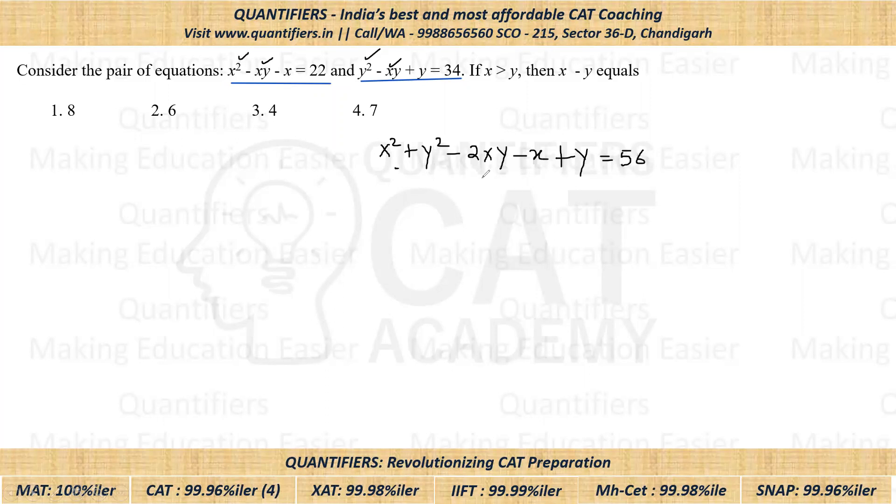Now this thing can be written as (X - Y)². So (X - Y)². And from here students, if I take minus one common, again, I'll be left with X minus Y. Okay. Now this is equal to 56.